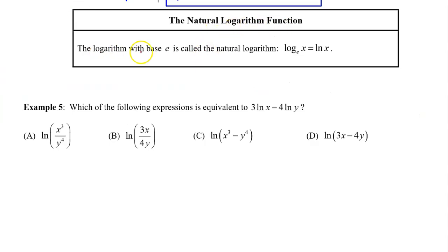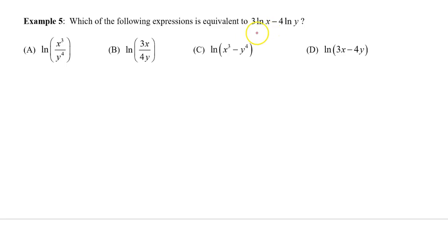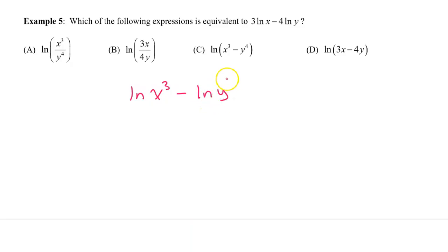The natural logarithm function. The logarithm with base e is called the natural logarithm, so log base e of x is written as ln x. Natural log is what you will see most often next year in calculus, so get comfortable with it. Example 5: which of the following expressions is equivalent to 3 times natural log x minus 4 natural log y? We can take the numbers in the front and move them to the exponent using the power rule, giving natural log x to the third power minus natural log y to the fourth power. Then we combine these into a single log term using the quotient rule: the natural log of x to the third power over y to the fourth power. So the answer is A.